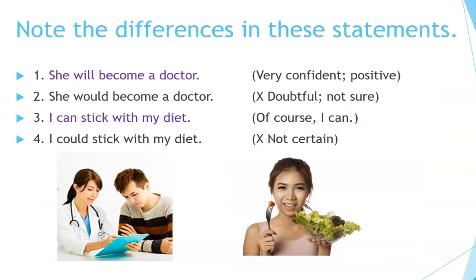Note the differences in these statements. 'She will become a doctor' — she's very confident and positive about the future prospect. 'She would become a doctor' — she's not so sure; it's quite doubtful; it's better not to say this one. 'I can stick with my diet. Of course I can' — confident and certain. 'I could stick with my diet' — it's not certain; sounds like I'm not sure. It's better to avoid that one in these situations.